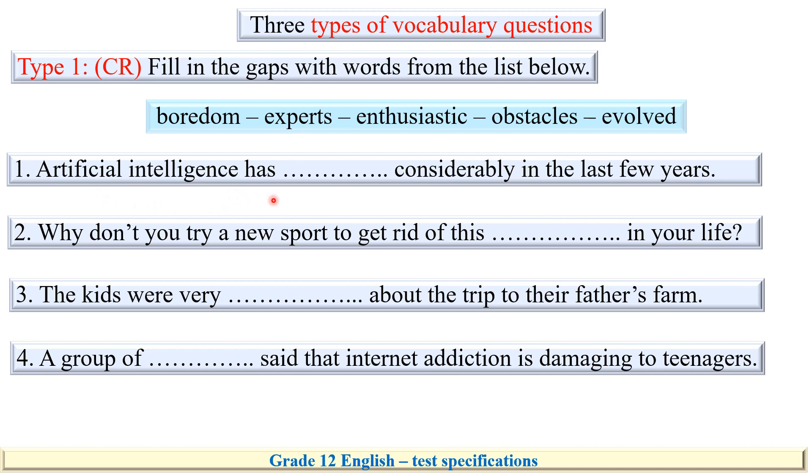Artificial intelligence has - this has is an auxiliary verb, exactly. So we need a past participle to form the present perfect. There is only one past participle here. Why don't you try a new sport to get rid of this, something wrong or something bad in your life. It must be boredom, right?